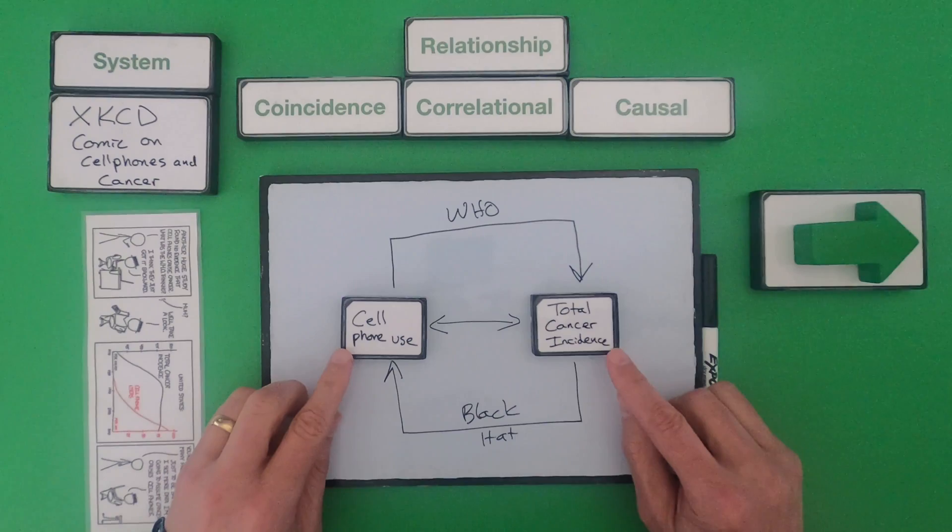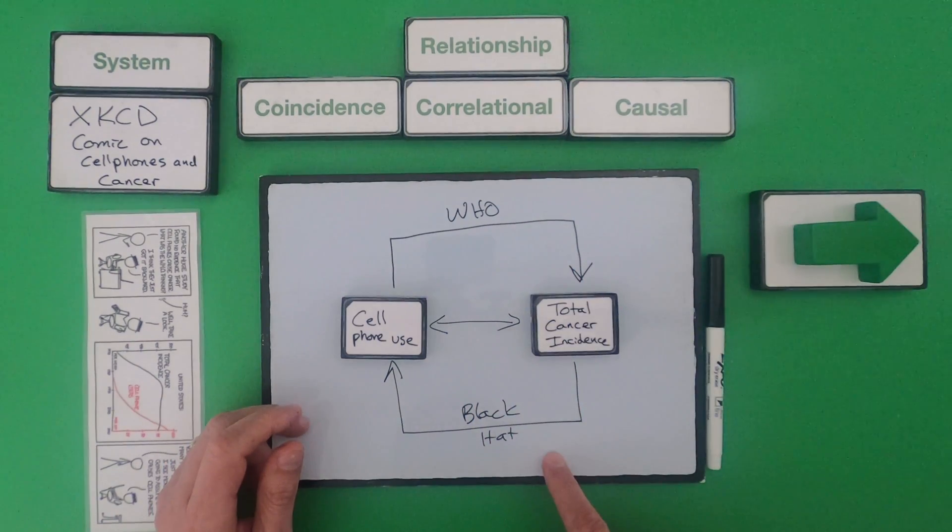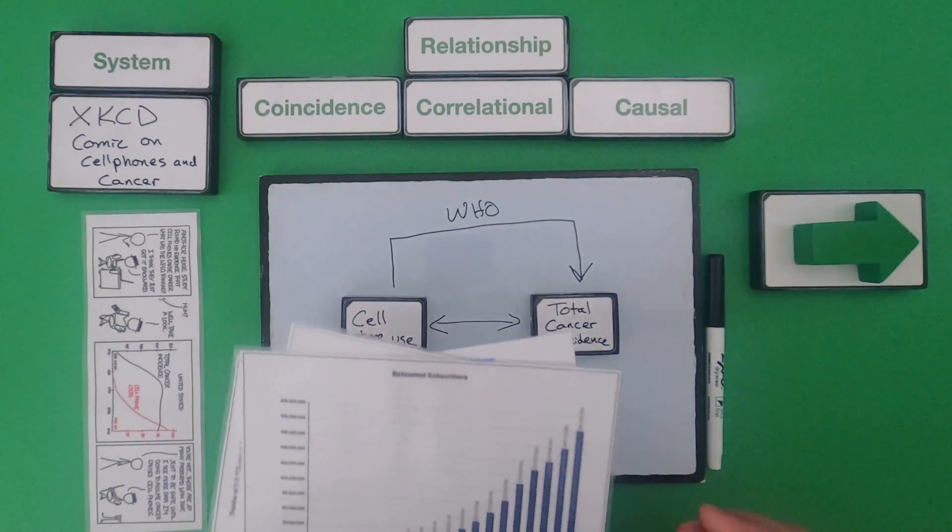So the first thing you should do is put forward what do you think is represented in the system. And so we've got these two events. There's a correlation maybe here, a causation here, and then a reverse causation here. But then the next thing to do is look at some data. So if you looked at some of the data below.